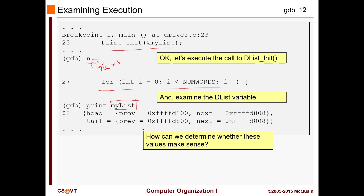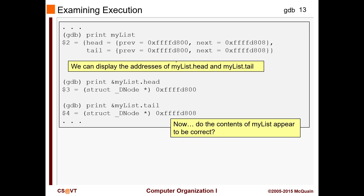This is what our `my_list` looks like. `my_list` was a `dlist`, so `dlist` has a head and a tail. Its previous points here and its next points here. Surprisingly, tail is doing the same thing - they are literally pointing in the same direction for now. After initialization this is going to be fixed.